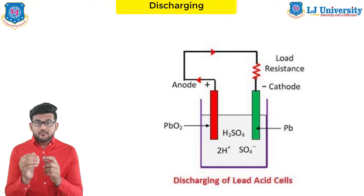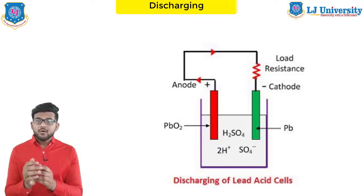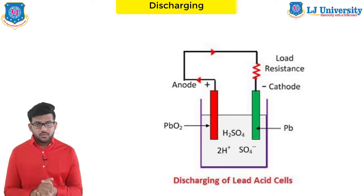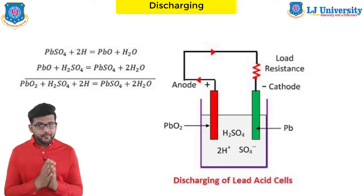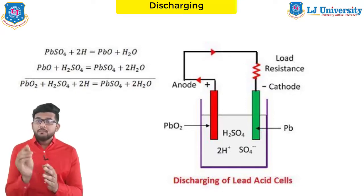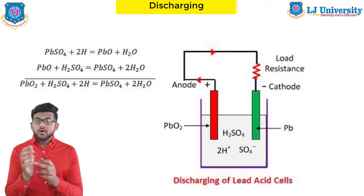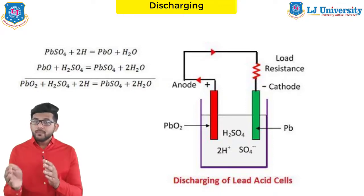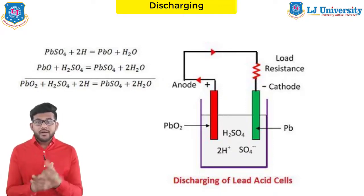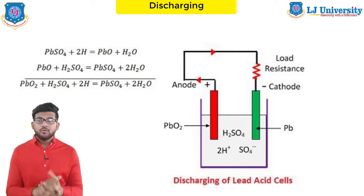When the cell is fully charged, the anode is of lead peroxide, PbO2, and the cathode is of sponge lead, Pb. When the electrodes are connected through a resistance, the cell discharges and electron flow is in the direction opposite to that of charging. The hydrogen ions move to the anode, receive one electron, and become hydrogen atoms. The hydrogen atom comes in contact with the PbO2 and reacts to form lead sulfate, PbSO4, which is whitish in color, and water, according to the chemical equation shown. The SO4²⁻ ion moves towards the cathode, gives up two electrons, and attacks the metallic lead cathode to form lead sulfate, also whitish in color.